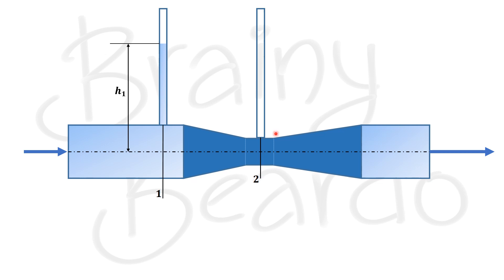Because of the fluid pressure at section 2, the fluid rises inside the second piezometer, but it will not rise to the height of the first piezometer. The height of the fluid in the second piezometer is h2. Between the first and second piezometers there is a height difference, and that difference in height is called h.